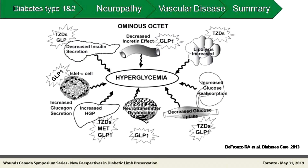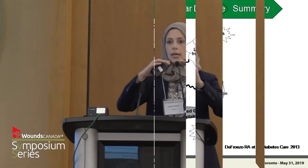DeFronzo presented his 'ominous octet' at the ADA in 2008. In addition to the three original components — insulin resistance at the liver, at the muscle, and beta cell destruction — we see that the core defects extend to various other organs. This explains why we have different therapeutic modalities to tackle type 2 diabetes from a pathophysiological point of view, and we need to look at that when we look at diabetic foot disease as well.